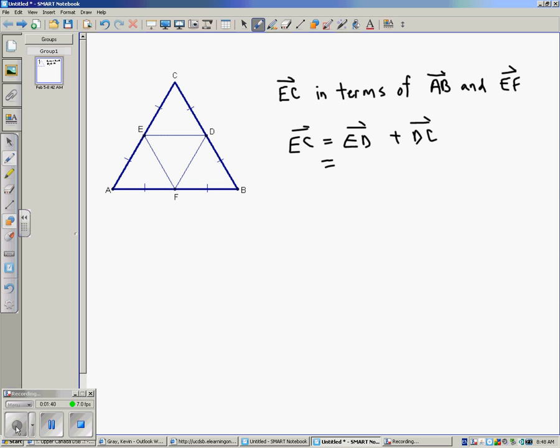hopefully you'll see pretty quickly that ED is the same as AF. ED is exactly the same vector as AF. So the order is important in this case. It starts at E, goes to D, it starts at A, and goes to F.